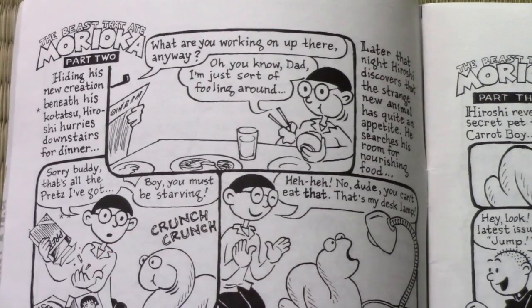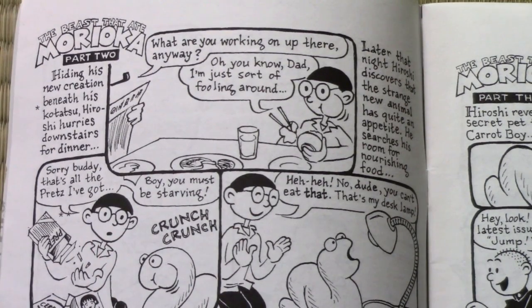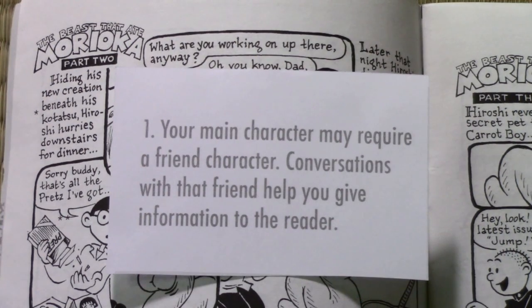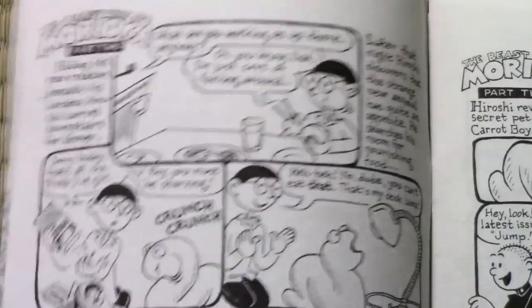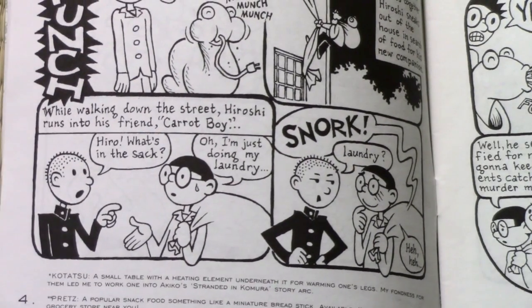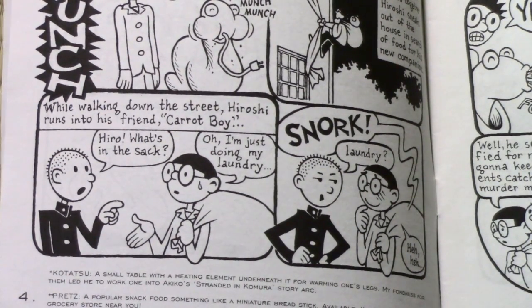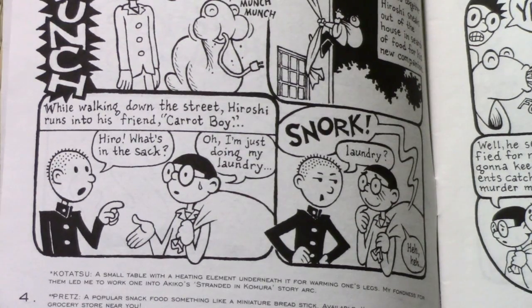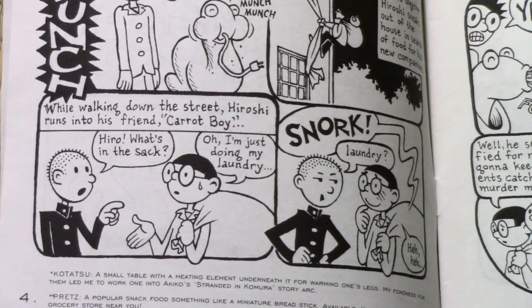Here we have Hiroshi Okada, the main character of the story. Number one: your main character may require a friend character. Conversations with that friend help you give information to the reader. Even on this first project, I began with just Hiroshi on his own going through these experiences by himself. But by the end of the second page, I understood we need to get a friend in here to make the story more interesting and to give Hiroshi someone to talk to.